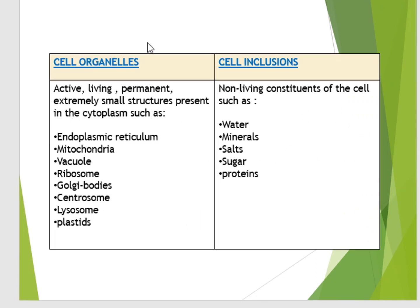Good morning students, today we are going to study about cell organelles and cell inclusions and we will also learn how to draw the diagram of the animal cell. Cell organelles are active, living, permanent small structures that are present in the cytoplasm.